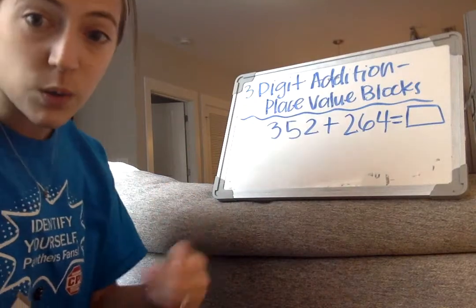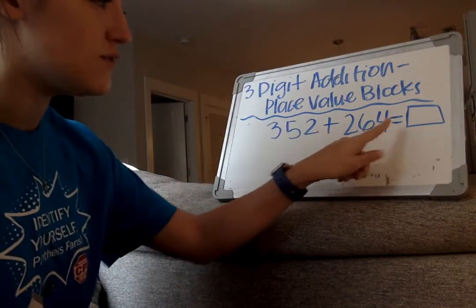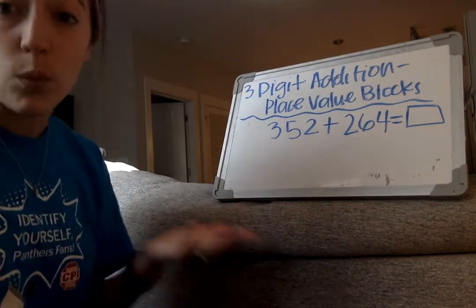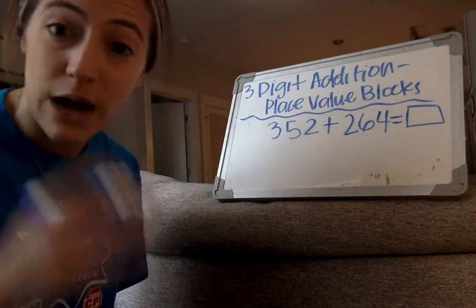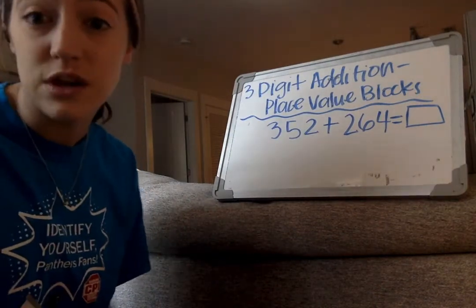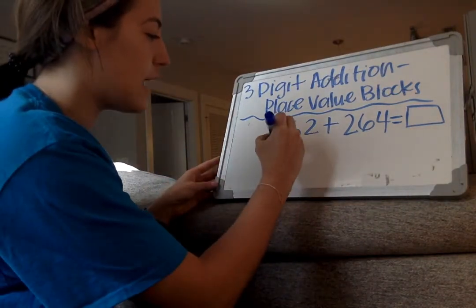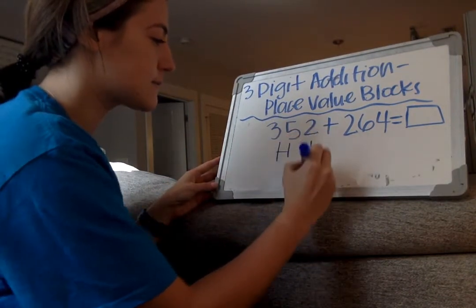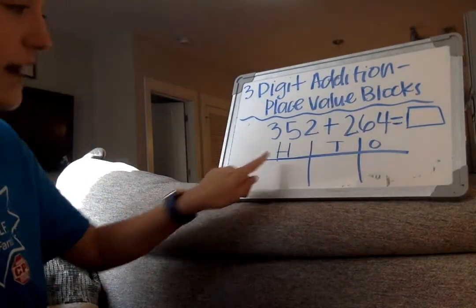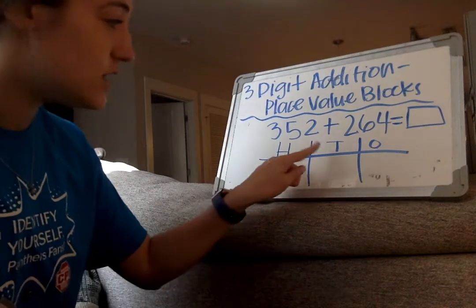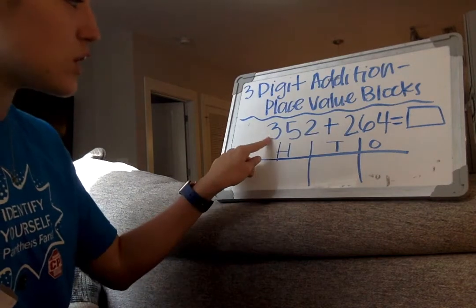Let's get started. When we're using our hundred tens-and-ones chart strategy, we look at our number, we read our equation out loud: 352 plus 264 equals box or blank. We want to know what those two numbers put together equals. So what we do now is we draw that chart. We draw our hundred tens-and-ones chart. Now we have our H, which stands for hundreds, our T, which stands for tens, and our O, which stands for ones.